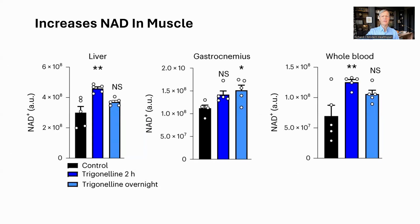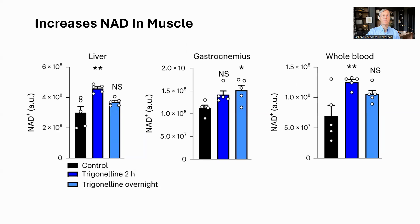Does trigonelline raise NAD levels in tissues? This graph comes from an in vivo test on mice, showing that NAD was raised significantly in the blood and the liver after two hours, and in the gastrocnemius after 24 hours. The gastrocnemius is a leg muscle, so this is showing NAD raised in muscle tissue, which NMN and NR are less effective at.